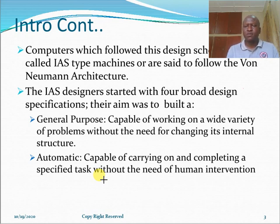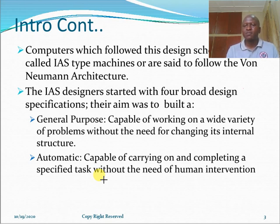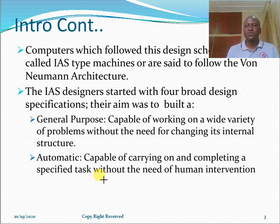By general purpose, we imply that the computer should be capable of working on a wide variety of problems without the need for changing its internal structure or circuitry. The previous computers before the Von Neumann design were actually hardwired, so once hardwired they could only carry out a specific task. If you wanted to reprogram the computer to perform any other task, the internal circuitry or wires would have to be reconfigured. The Von Neumann report aimed at building a computer that is general purpose, capable of tackling various types of problems.